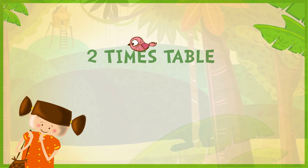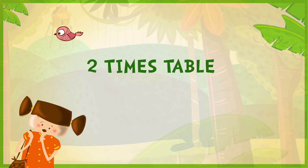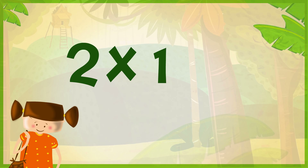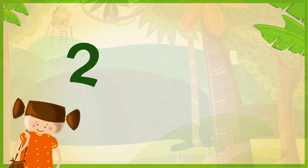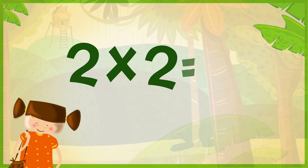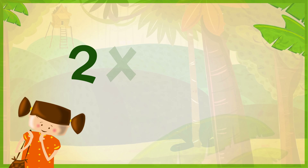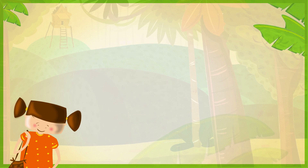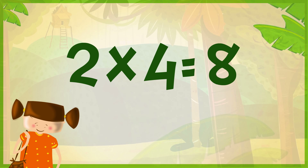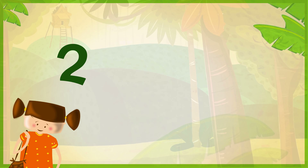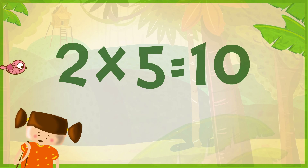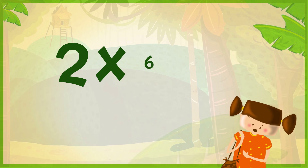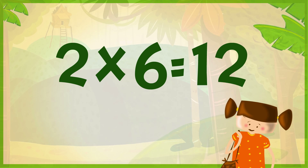Today we're going to learn the two times table. 2 x 1 is 2, 2 x 2 is 4, 2 x 3 is 6, 2 x 4 is 8, 2 x 5 is 10, 2 x 6 is 12.